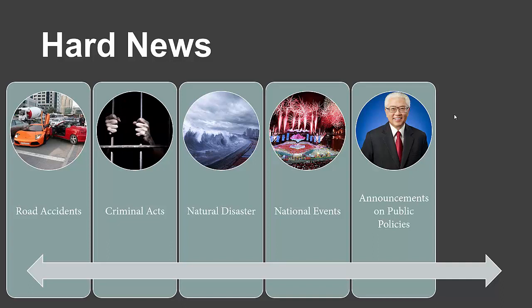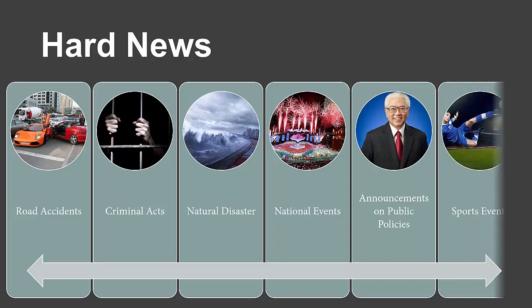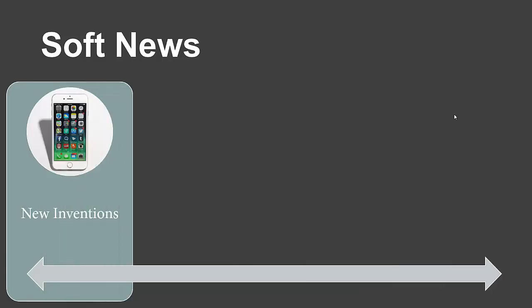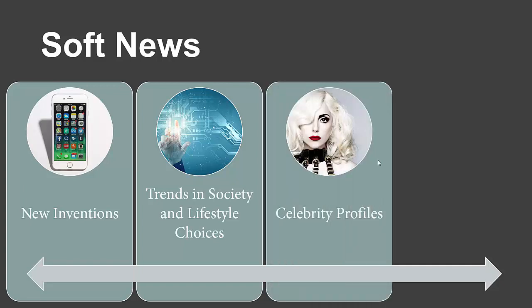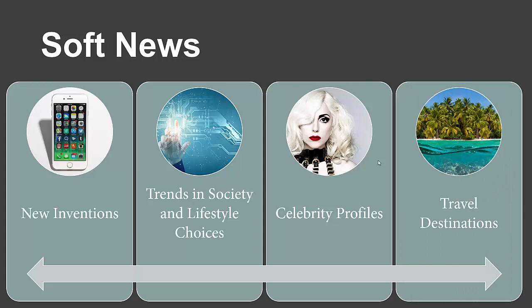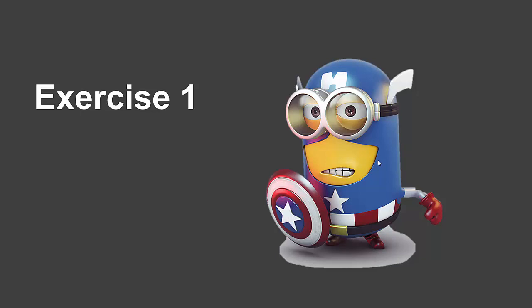Soft news, on the contrary, has four types. First, new inventions — for example, if the latest iPhone comes out, that would be considered a new invention. Second, trends in society and lifestyle choices — for instance, if more people start using kick scooters to travel, that is a lifestyle trend. Third, celebrity profiles — such as Lady Gaga deciding to wear a meat dress. Fourth, travel destinations — such as articles about the Maldives. These all fall under soft news.